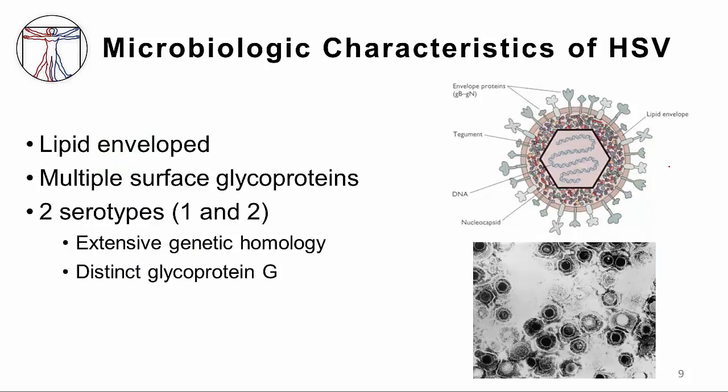The herpes viruses, as depicted in this schematic, are enveloped — there is a lipid envelope around the virus. Stuck within this lipid envelope are a number of surface glycoproteins that are named by the alphabet: glycoprotein A, glycoprotein B, and so forth. One of the glycoproteins, glycoprotein G, is especially important, as I'll mention in a moment.